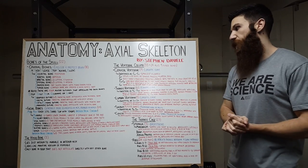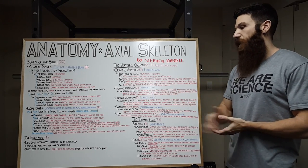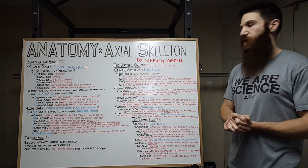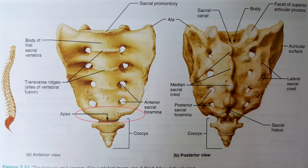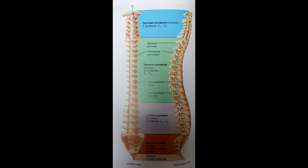Now let's move to our sacrum and coccyx. Our sacrum is comprised of 5 fused bones and it is the posterior wall of the pelvis. They are identified as S1 to S5, are triangular shaped, and they articulate superiorly with L5. Inferiorly, they articulate with the coccyx. And laterally, they articulate with two hip bones to form the sacroiliac joints.